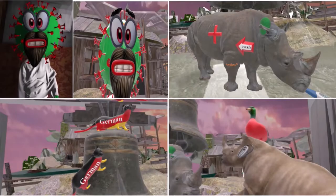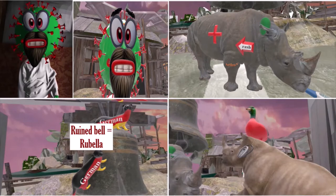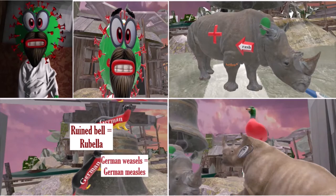In this insane scene, we learn about rubella virus, the cause of rubella. Rubella is represented by this ruined bell — someone came in the middle of the night and shattered this bell. So ruined bell reminds us of rubella. The owner thought it was the German weasels that did it. German weasels reminds us of German measles, as rubella virus is also known as German measles.